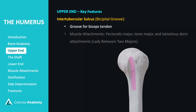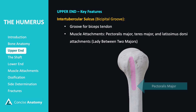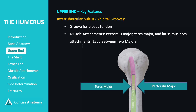The intertubercular sulcus is a groove on the humerus that houses the long head of the biceps tendon. It serves as the attachment site for the pectoralis major on its lateral lip, the teres major on its medial lip, and the latissimus dorsi on its floor.